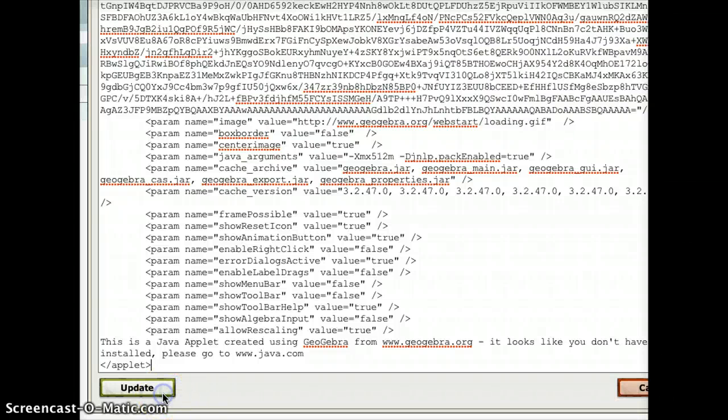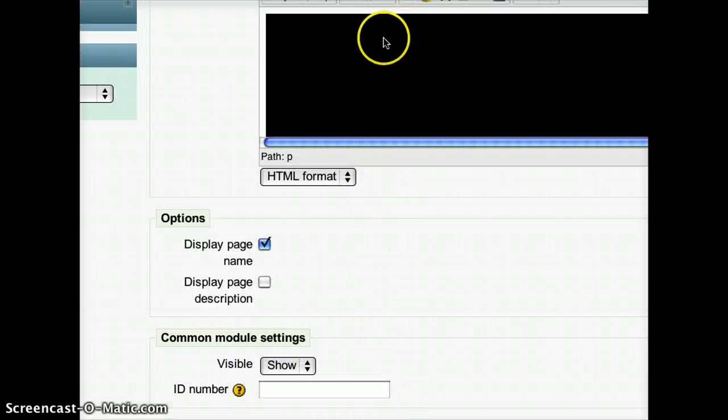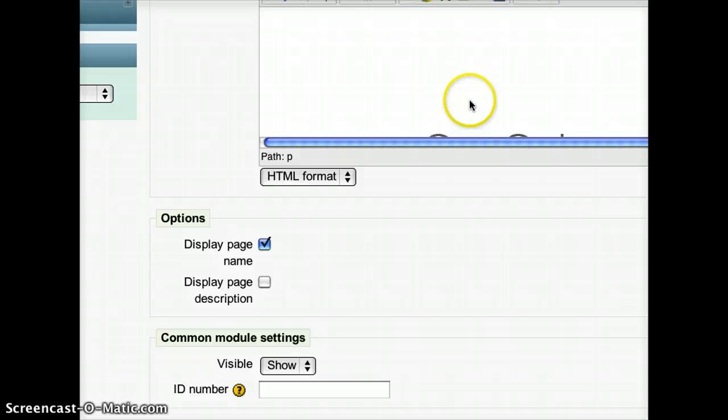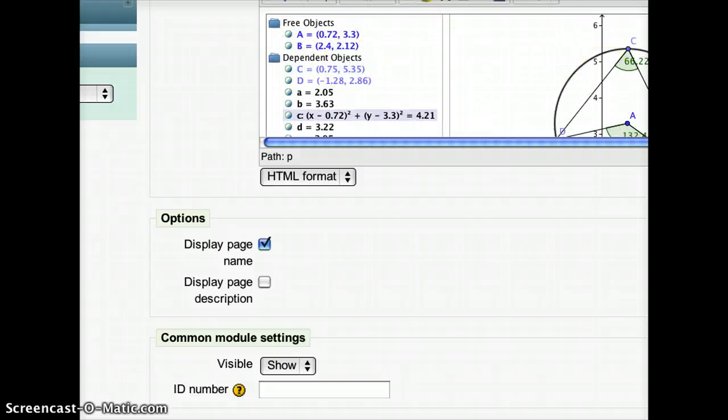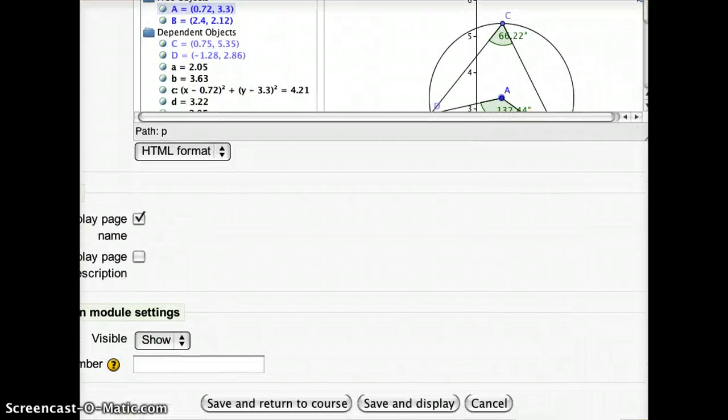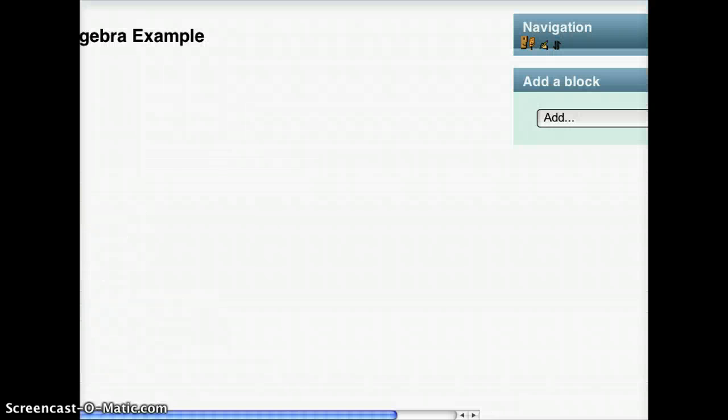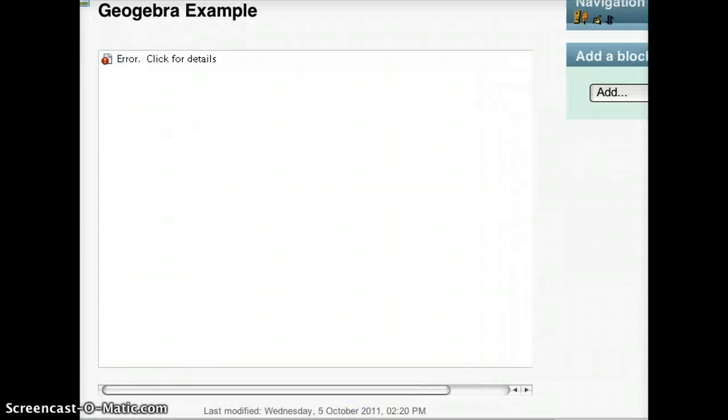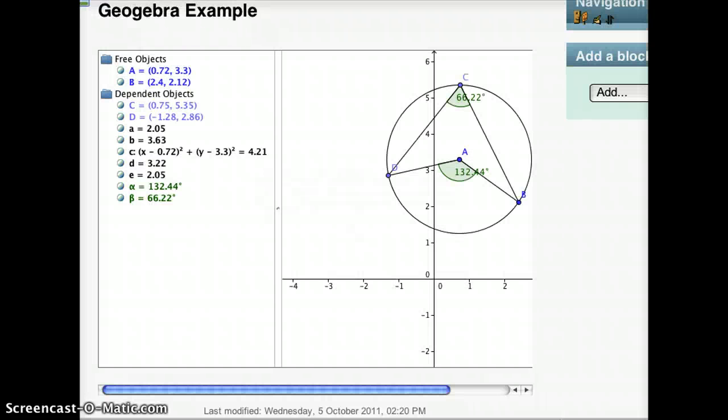Now what I can do is press update. And you'll find that the browser takes a second because it has some work to do in the background. But once it's done, you'll see this little black square as all of a sudden my applet is now embedded within the Moodle page. So now all I need to do is just go back, save and display.